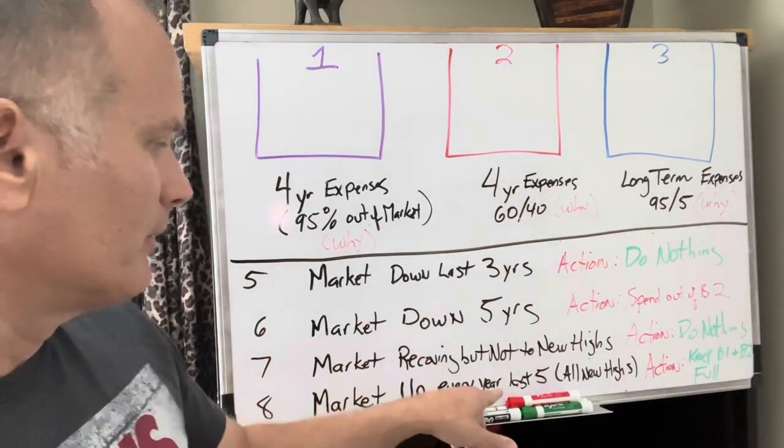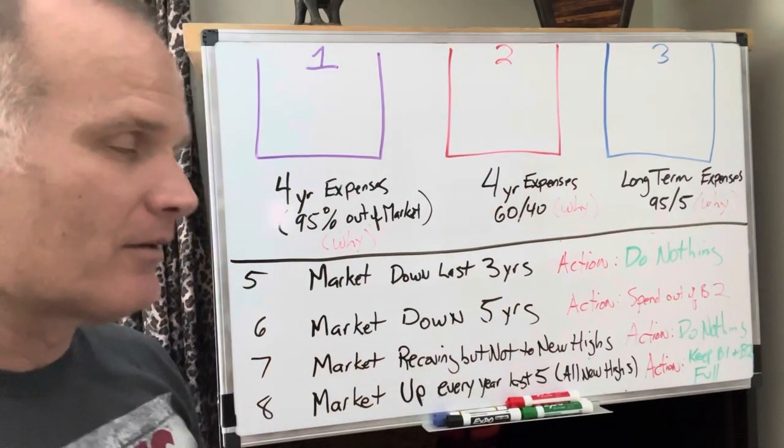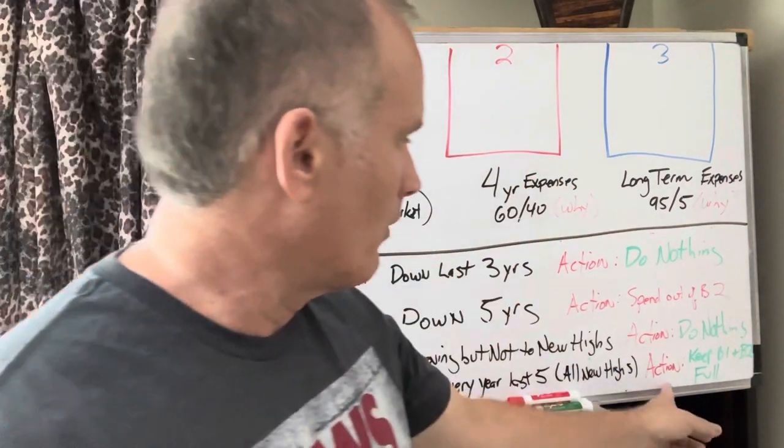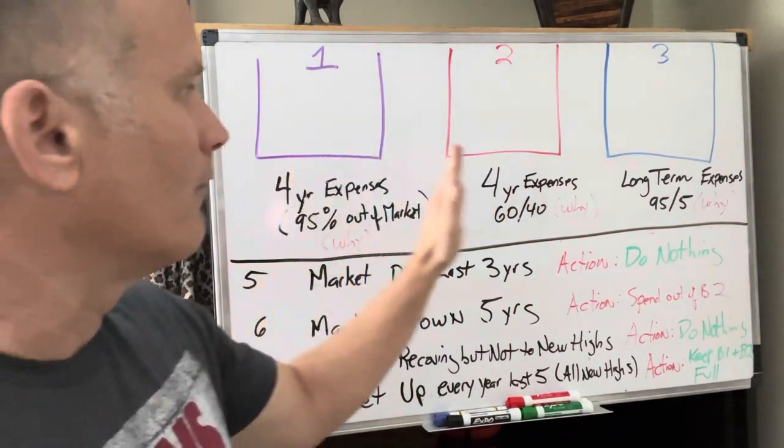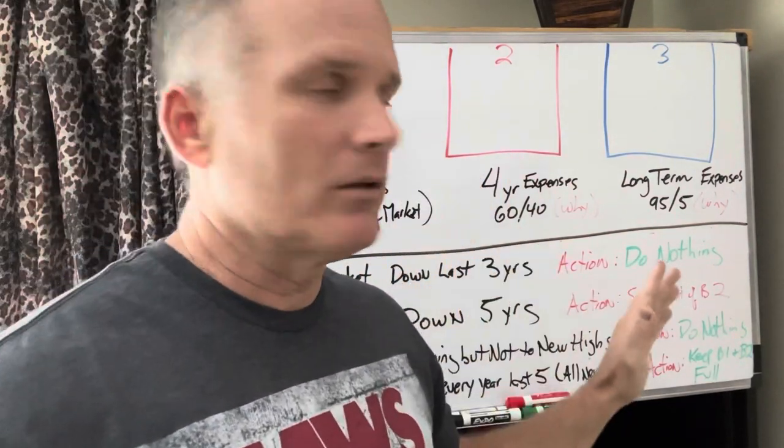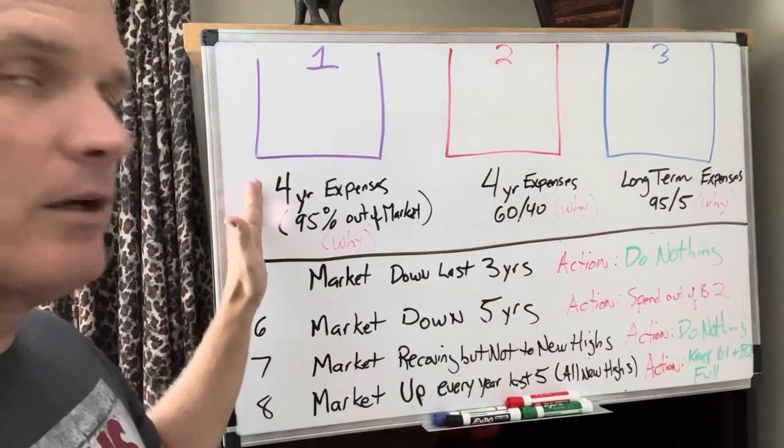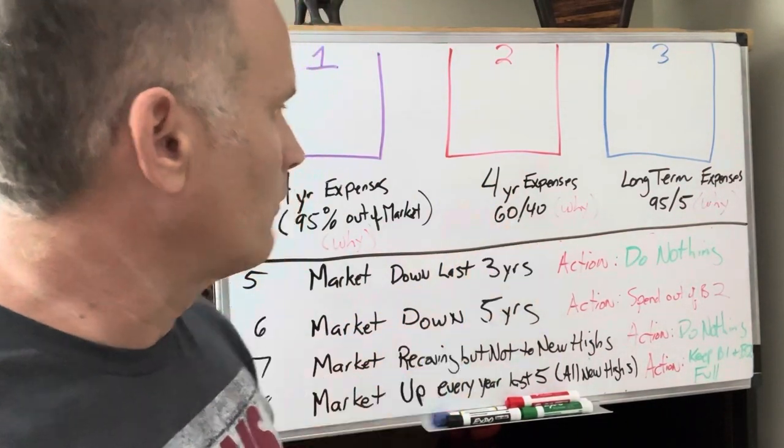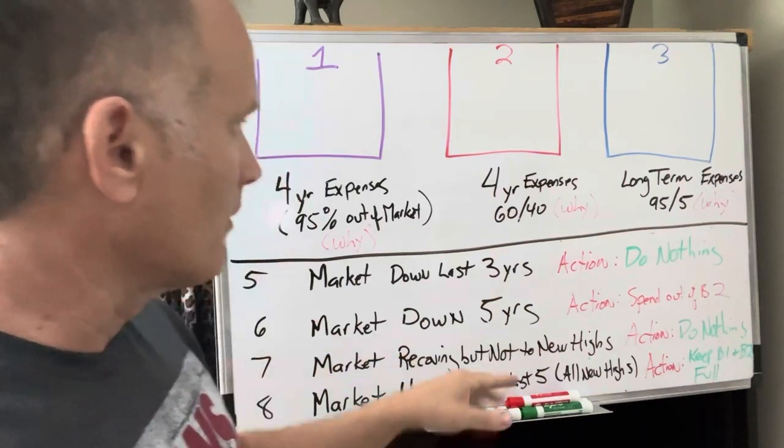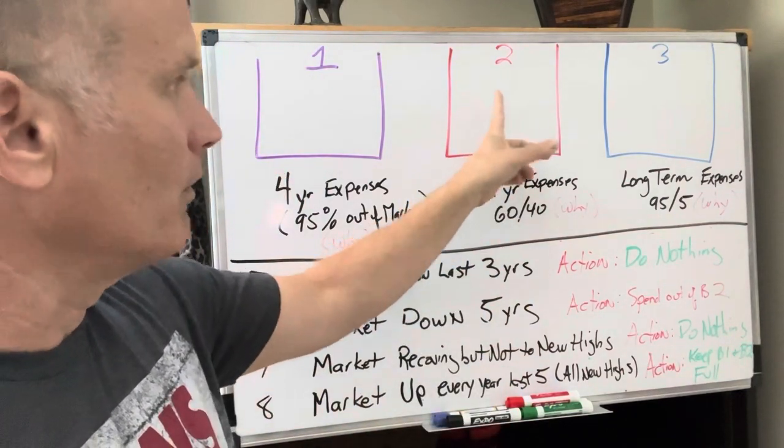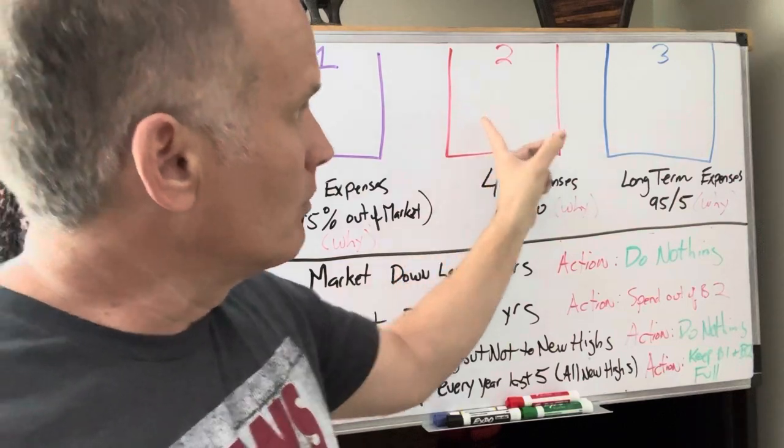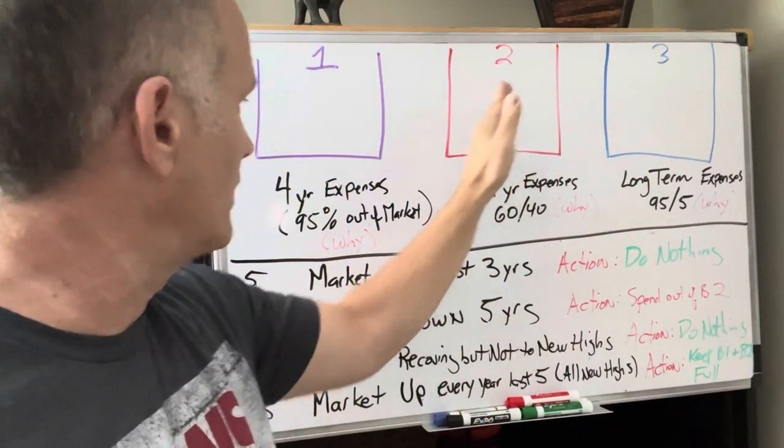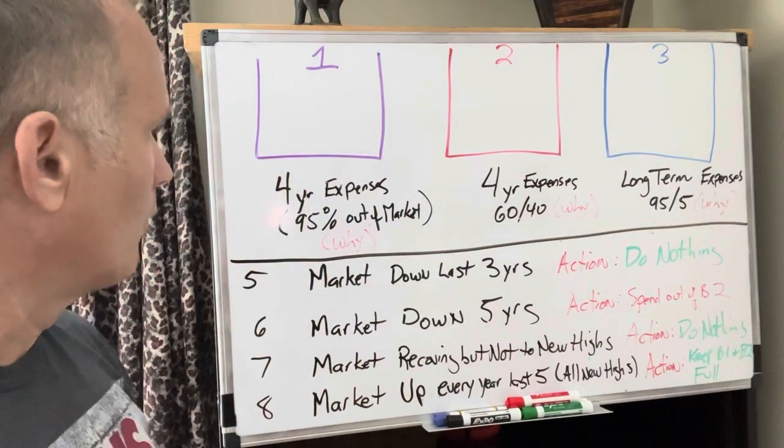The market is up every year for the last five years. It's up 10%, 20%, 30%, 40%. What action do you take? You keep bucket one and bucket two filled to serve their purpose. This one has four years of a bear. This one has four years after that in a good 60-40 mix. Good chance if the market is up and up and up, you probably will build up too much money in here and you can move money from two to three. Because remember this just has a purpose here and then you'll have to keep topping off bucket one here.